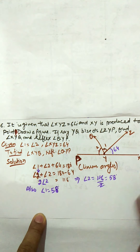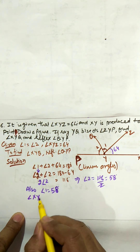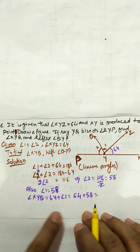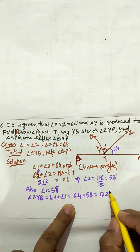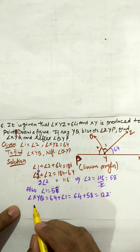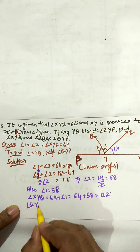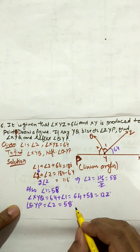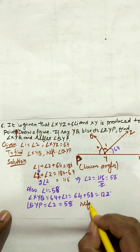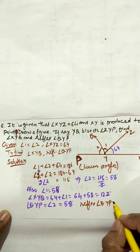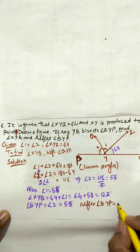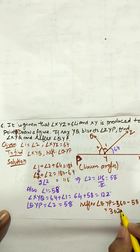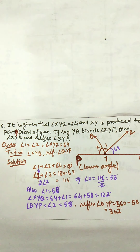Angle QYP = angle 2 = 58°. But we need the reflex of angle QYP, which is greater than 180°. So reflex angle QYP = 360° − 58° = 302°. We have now found both required values: angle XYQ = 122° and reflex angle QYP = 302°.